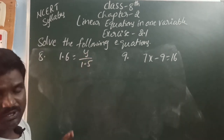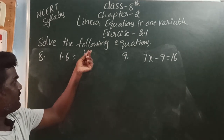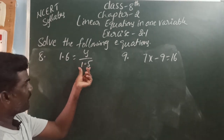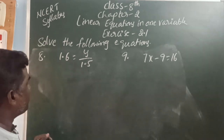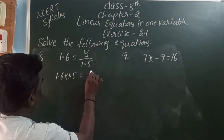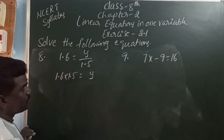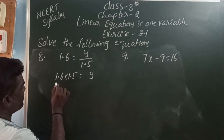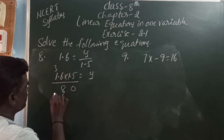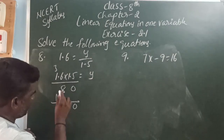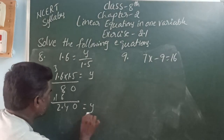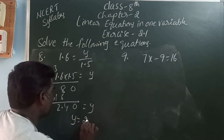1.6 is equal to y by 1.5. Here, the variable y is divided by constant 1.5. This divide constant 1.5 is moving to the LHS and it becomes multiple. So 1.6 into 1.5 is equal to y. There are 2 decimal places, so multiplying: 1.6 into 1.5 gives 2.40. The value of y is 2.40.